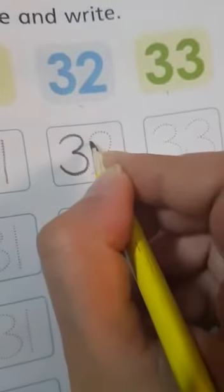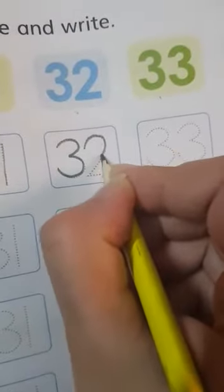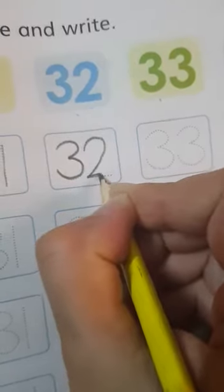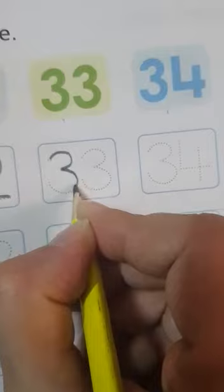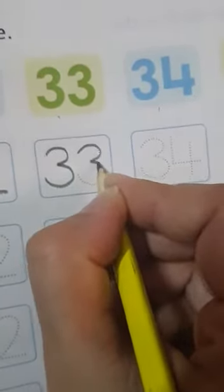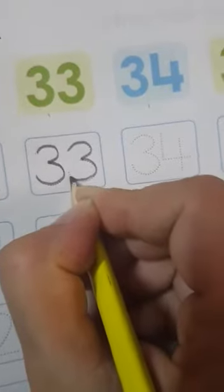Then this is 32, like this. This is 32. Then we have 33, like this. 33.